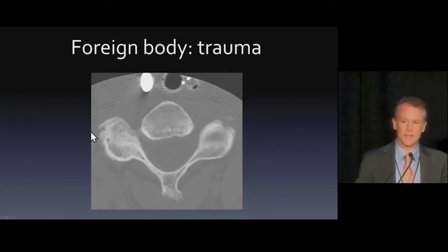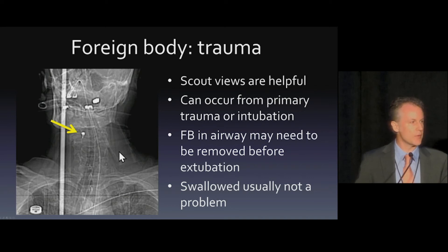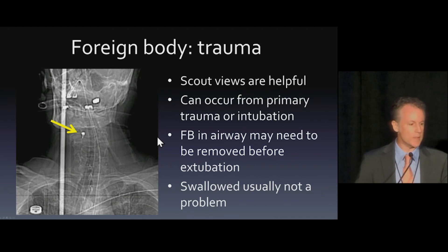Here's another foreign body case — a foreign body in trauma. This is something we might not think to look for in a trauma pan scan, but it's important. You see the endotracheal tube and this metallic foreign body that we don't know what it is. On the scout view, we can see it. That turned out to be a dental crown that was knocked off. Sometimes people are intubated in the field, and if they have poor dentition these can get knocked off into the airway and get stuck. If they're swallowed it's not usually a problem, but if they're aspirated after intubation, we want to make sure clinicians take them out before they extubate.